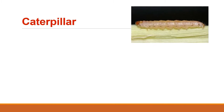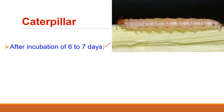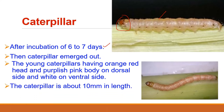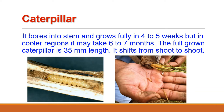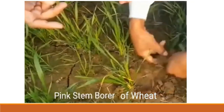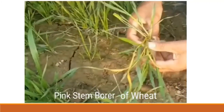The next stage is caterpillar or larval stage. After the incubation period of 6 to 7 days, the young caterpillars, having orange-red head and purplish-pink body on the dorsal side and white on the ventral side, emerge out. It is about 10 mm long. These larvae bore into the stems of wheat plants to feed and never feed on the exposed part. The caterpillar grows fully in 4 to 5 weeks, but in cooler regions it may take 6 to 7 months. During its growth it undergoes 6 to 7 moults.